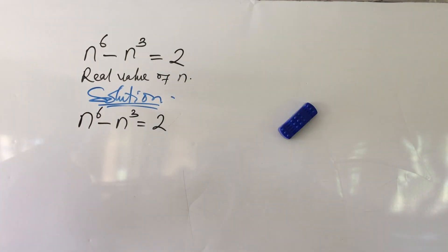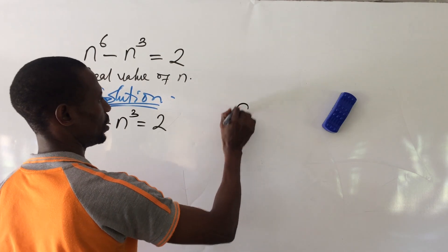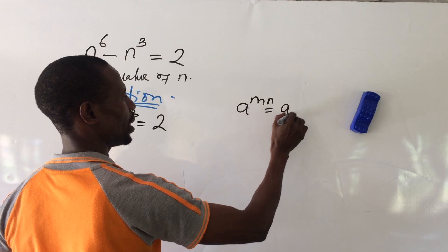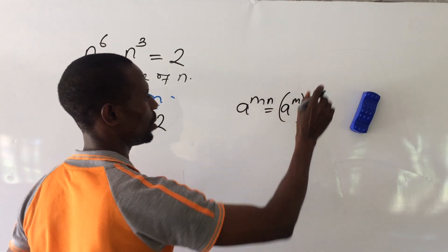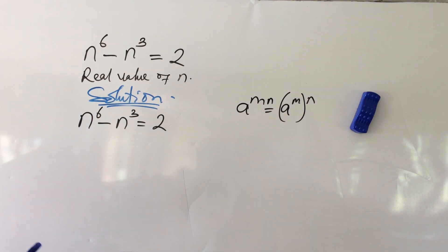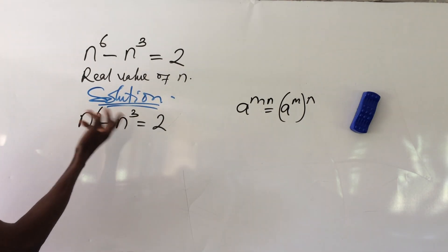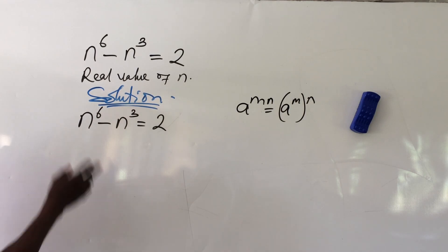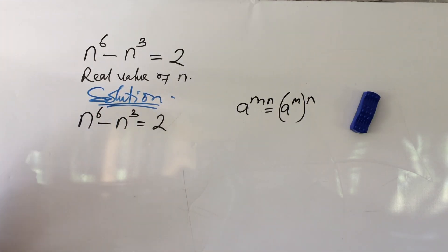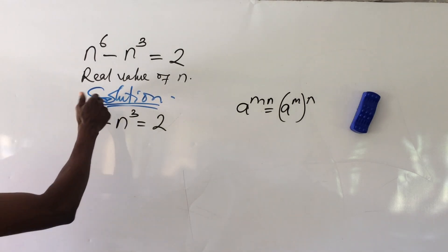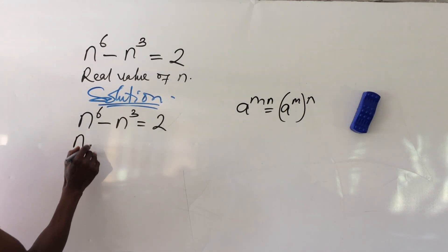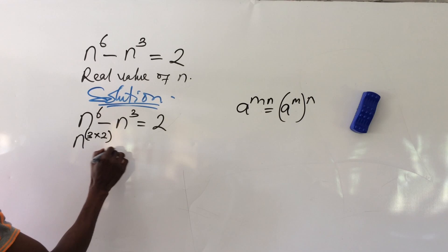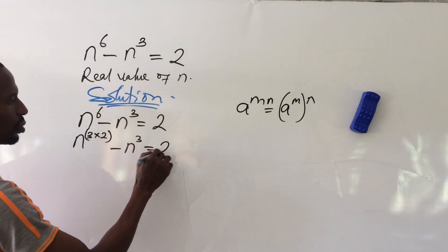So we think of bringing out n to the power of 3. We apply the law of indices: a to the power of m times n equals a to the power of m·n. We need two numbers that multiply to give us 6, keeping in mind that 3 is one of them. So 3 times 2 gives us 6, and we rewrite n to the power of 6 as n to the power of 3 times 2.